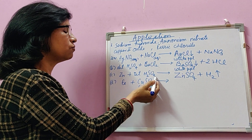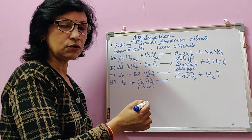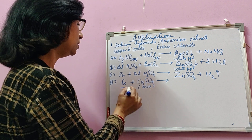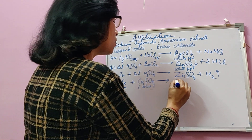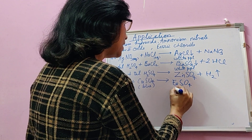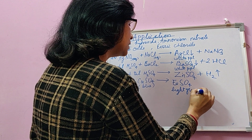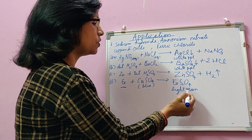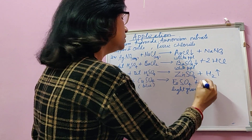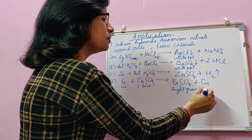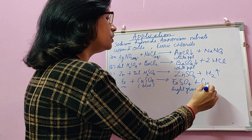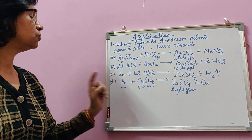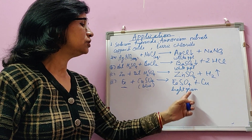Sulfuric acid was in aqueous solution form, so zinc sulfate formed will also remain in solution, and hydrogen gas will move out. When iron pieces are dropped in blue-colored copper sulfate solution, iron being more active displaces copper and forms FeSO₄, which is a light green substance that dissolves in solution. The solution gradually turns from blue to green. Copper is displaced and deposited over the iron pieces, which you note either as a statement or in the equation.